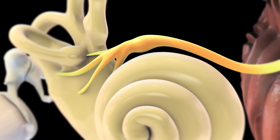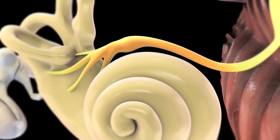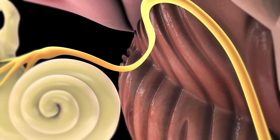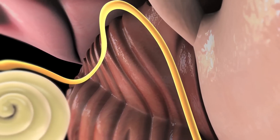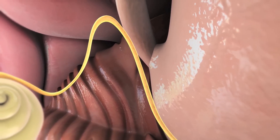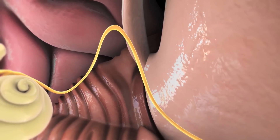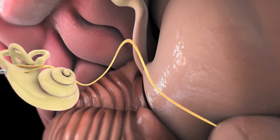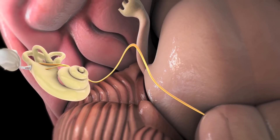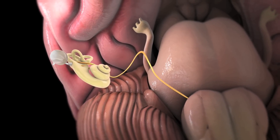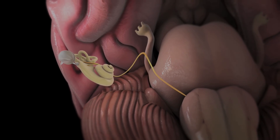The inner ear translates the vibrations into electrical signals, which are picked up by the auditory nerve, sent to the brain, and interpreted as sound. This all takes place in an instant, and lets us hear the sounds around us as they happen.